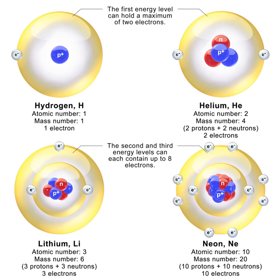Within the nucleus, protons and neutrons are bound together through the nuclear force. Neutrons are required for the stability of nuclei, with the exception of the single proton hydrogen atom. Neutrons are produced copiously in nuclear fission and fusion, and are a primary contributor to the nucleosynthesis of chemical elements within stars through fission, fusion, and neutron capture processes.